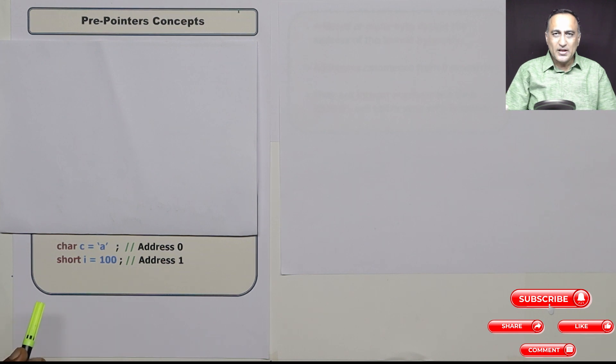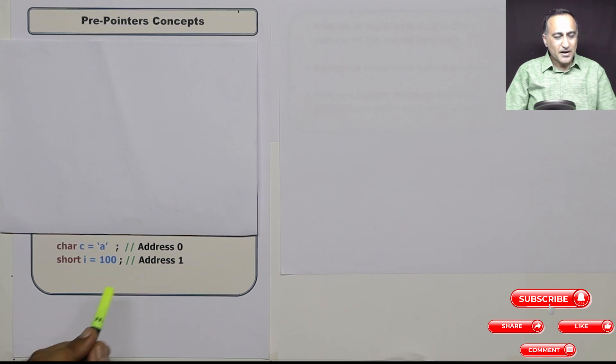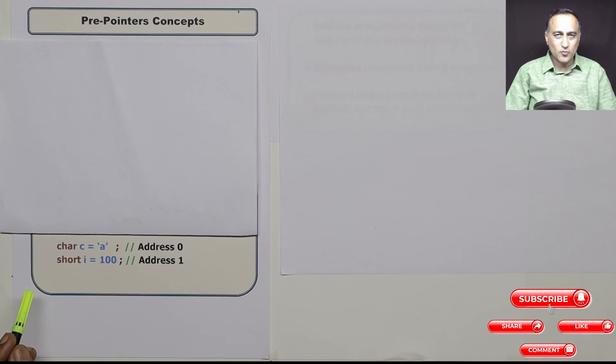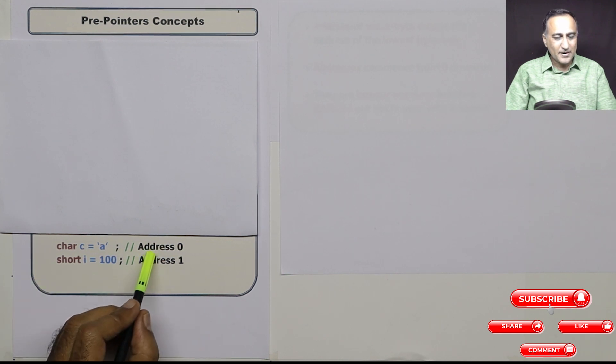Now these two variables need to be stored or they need to have some address in the main memory. Let's start our conceptual understanding by assuming that we are going to allocate variables starting from address zero. You will never have access to address zero because address zero has very important things related to the operating system, but just for conceptual clarity, I am going to say I am going to start storing my variables starting from address zero.